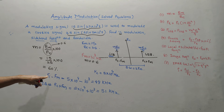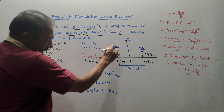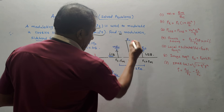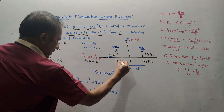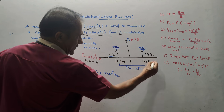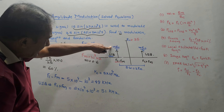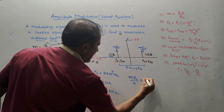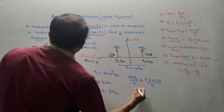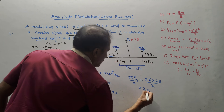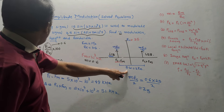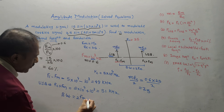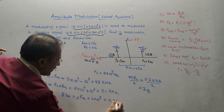The amplitude of each sideband is MEC/2 = 0.6 × 25 / 2 = 7.5 volts. For bandwidth, it is 2FM = 2 × 10³ Hz = 2 kHz. This numerical is pretty simple — you just have to remember the AM spectrum diagram and make use of the simple formulae.